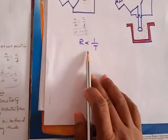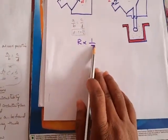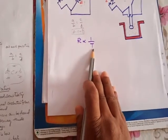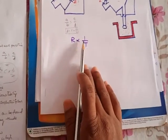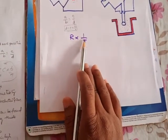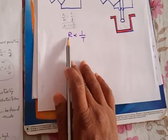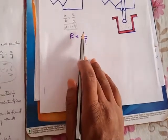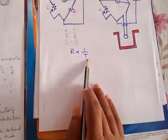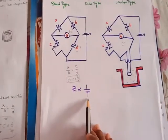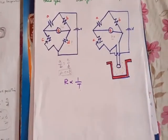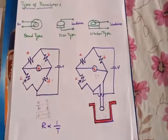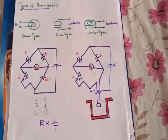Generally, the resistance is inversely proportional to temperature — that is, R is inversely proportional to temperature. If resistance increases, temperature decreases; if temperature decreases, resistance increases. This is the concept of the thermistor.